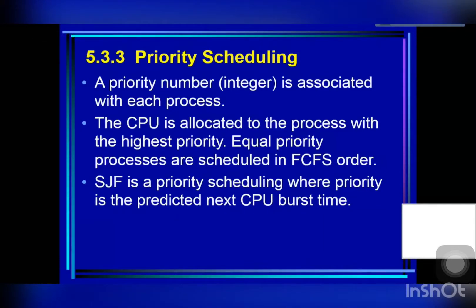A priority is associated with each process, and the CPU is allocated to the process with the highest priority. Equal priority processes are scheduled in first-come-first-served order. An SJF algorithm is simply a priority algorithm where the priority is the inverse of the next CPU burst — the larger the CPU burst, the lower the priority, and vice versa.